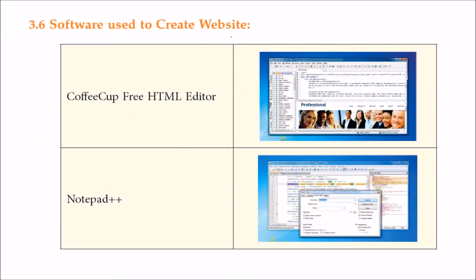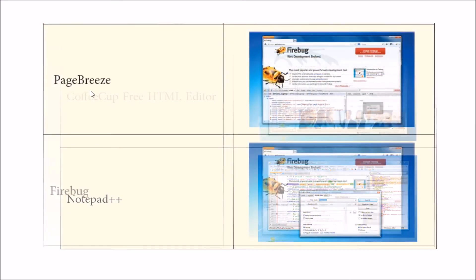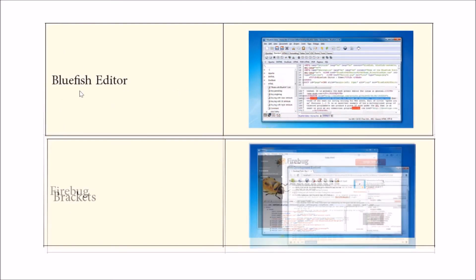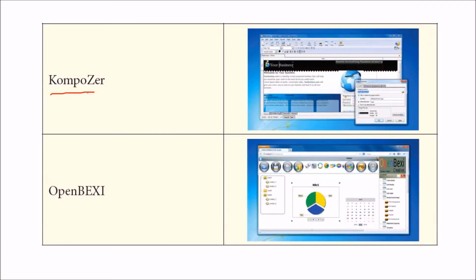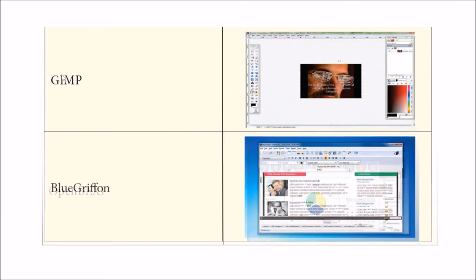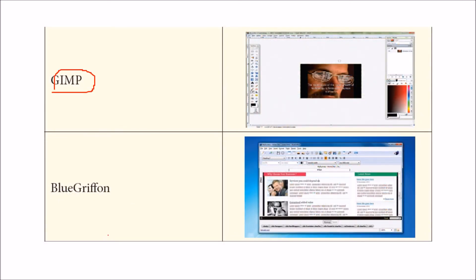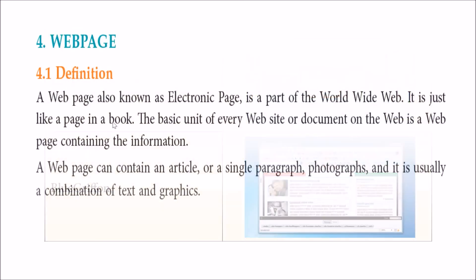There are various software tools used for making a website. For example, there is CoffeeCup Free HTML Editor, Dreamweaver, and for a very lightweight application to write HTML content, you can use Notepad++. Other tools include Pagebreeze, Firebug, Bluefish Editor, Brackets, Composer, OpenBEXY, Gimp for images, and Bluegriffon. If you search your search engine, you will find the latest ones being used.